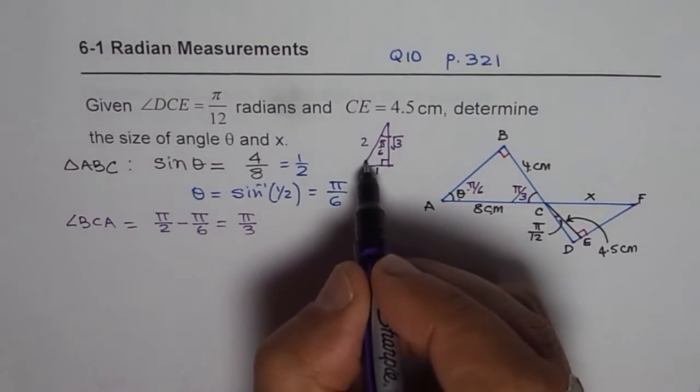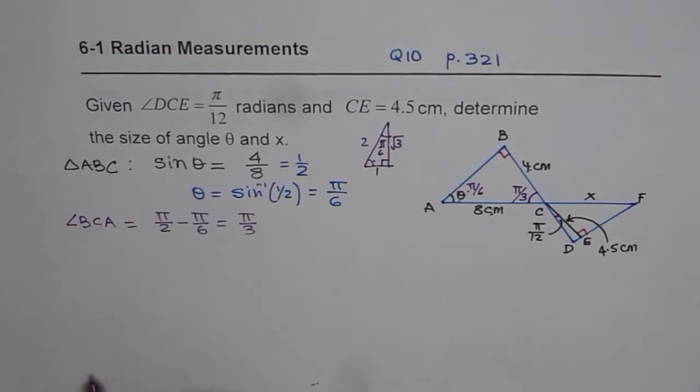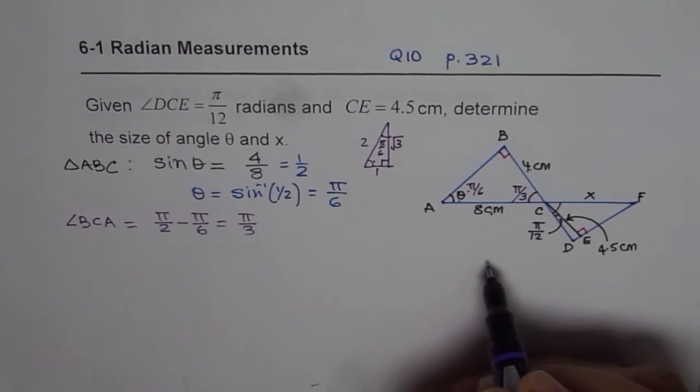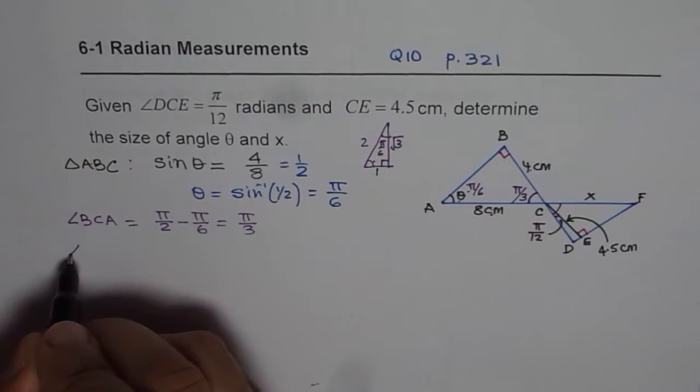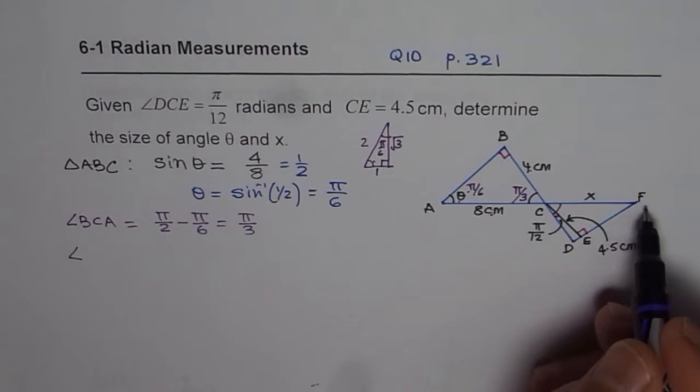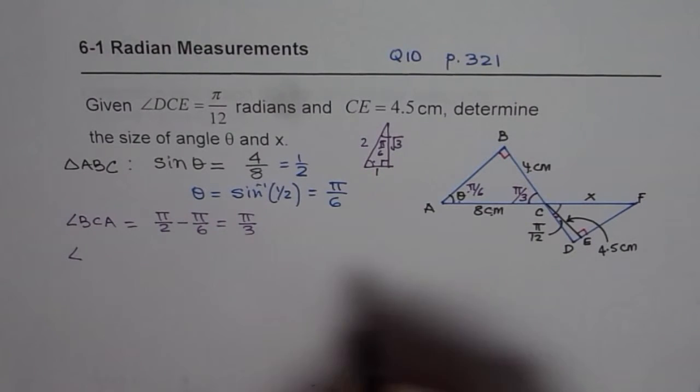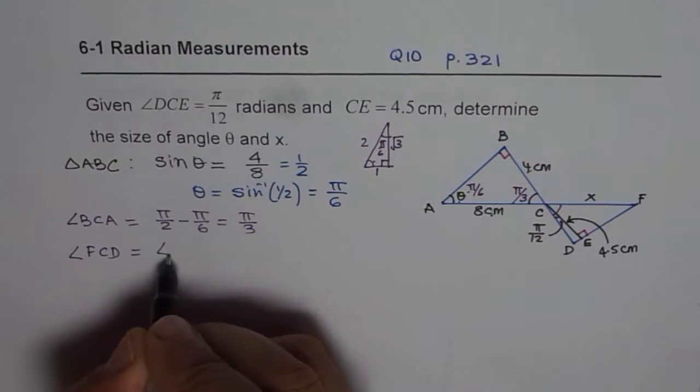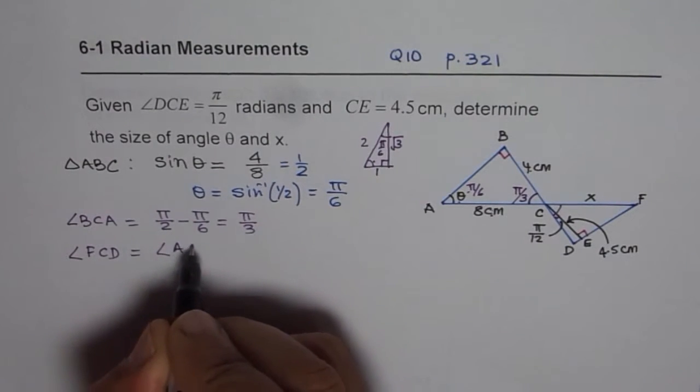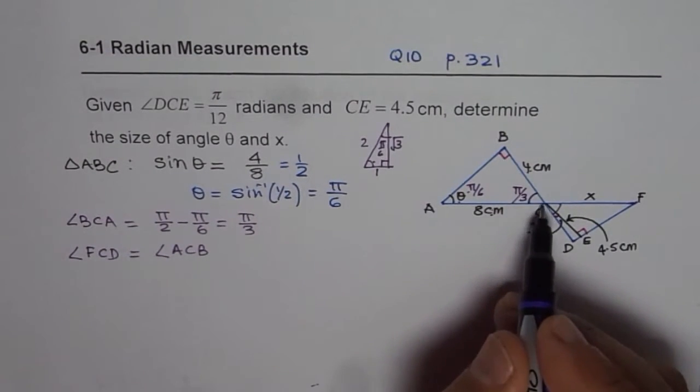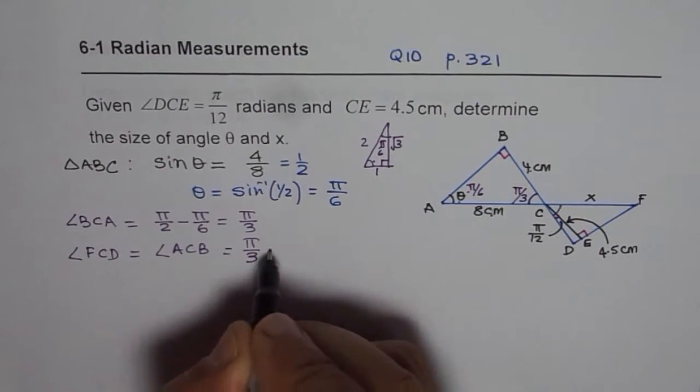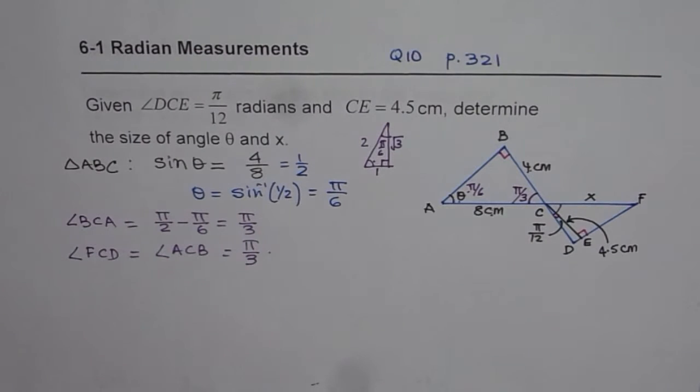So this angle for us is π/3. Now the vertically opposite angle should also be π/3. So we know angle FCE, which is angle FCD, should be equal to angle ACB, since they are vertically opposite angles. So both should be π/3.